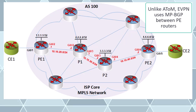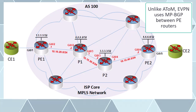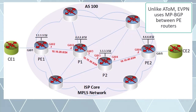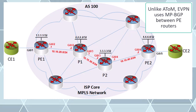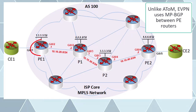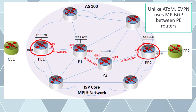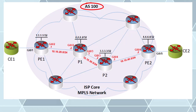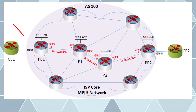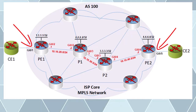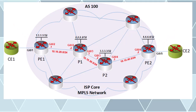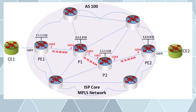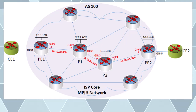Unlike Any Transport over MPLS or AToM, which uses a static assignment of pseudowires, here using eVPN we must configure MPBGP between our PE routers. We'll be using an ASN of 100 for our BGP AS. Note that we haven't yet configured our customer-facing interfaces on the PE routers — we'll do that a little bit later. There's a special configuration we need to employ for our BGP peerings on the PE routers which I'll show you right now.